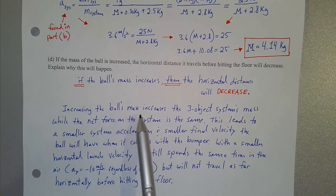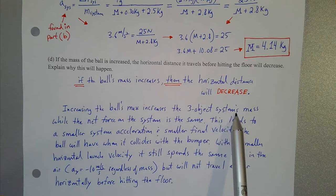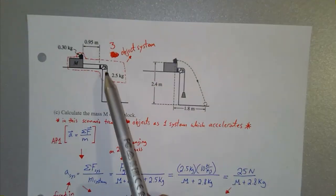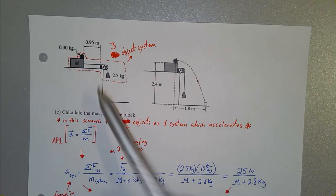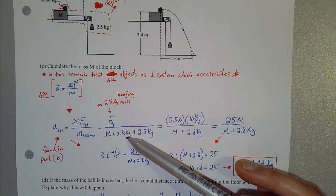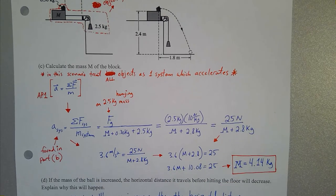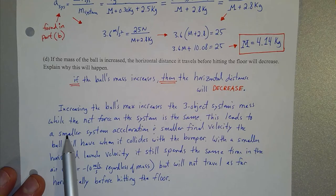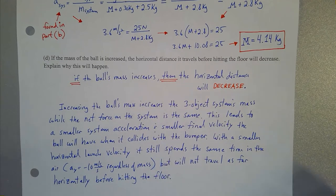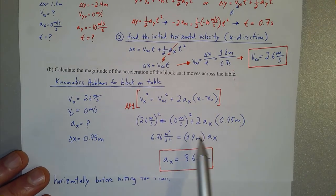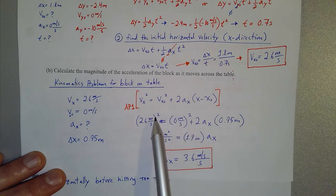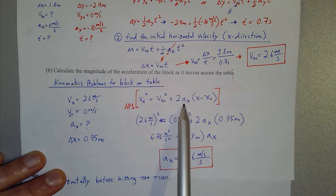Increasing the ball's mass increases the total three-object system's mass. The net force on the system remains the same — it's still just the gravity on the 2.5 kilogram hanging mass, still 25 newtons. Since net force is the same but total mass is larger, Newton's second law gives a smaller system acceleration. With smaller acceleration over the same 0.95 meter displacement starting from rest, the block and ball reach a smaller final velocity when the block hits the bumper.